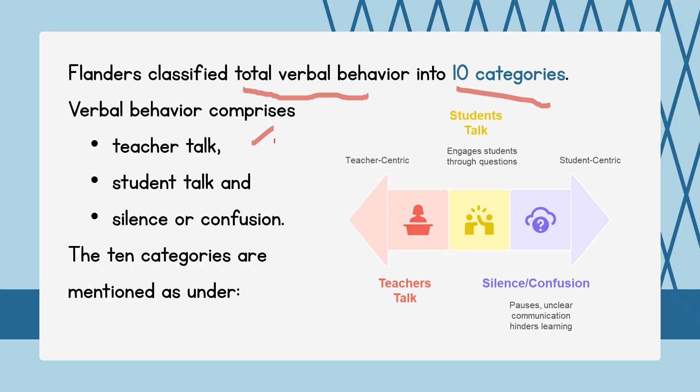The three major parts are: teacher talk, student talk, and silence or confusion. Teacher talk is more teacher-centric, student talk is more student-centric, and silence or confusion refers to a pause or unclear communication — for example, chaos that can happen when a large number of students talk at the same time.